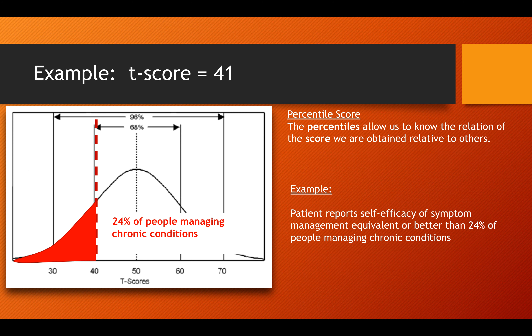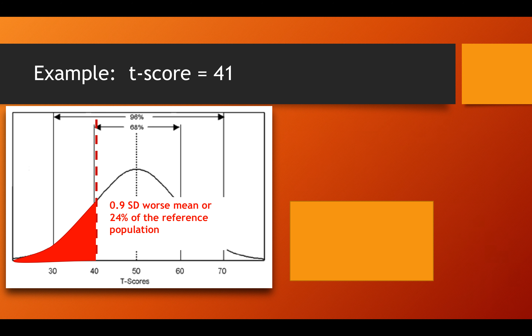Now let's focus on percentile scores. Percentile scores allow us to know the relation of the score we obtained relative to others. Let's say we got a 41 for the self-efficacy of symptom management scale. The percentile score for a 41 is around 24% of people managing chronic conditions. So we might put into the patient record: this patient's self-efficacy of symptom management is equivalent or better than 24% of people managing chronic conditions. What we've viewed so far is standard deviation units relative to the mean using a T-score, and then percentile scores with reference to their population.